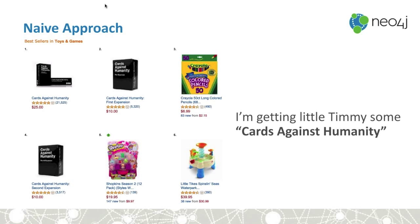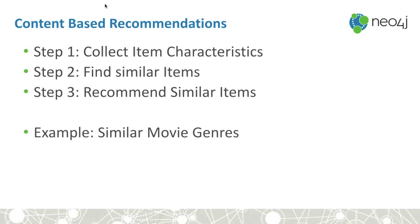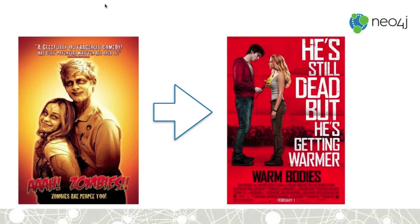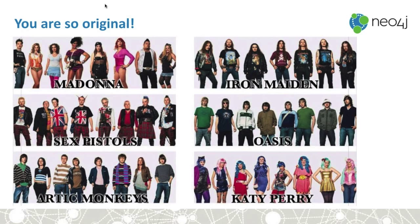Let's look at different ways to do recommendations. One is content-based filtering — a three-step process: look at item characteristics, find items that are similar, then recommend similar items. An example is movie genres. If you've just watched a movie like Oz Zombies, which is a romantic zombie comedy for teens, then you may like Warm Bodies, which is exactly the same thing. The only problem is there's more to life than just these types of movies, and sometimes you need to break out and recommend something different that the user may also like.